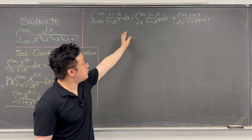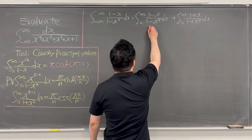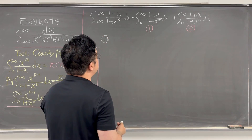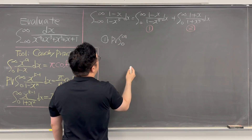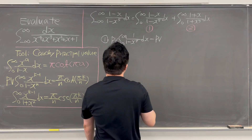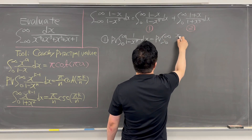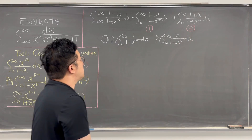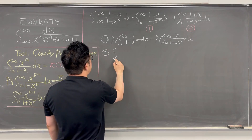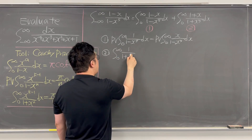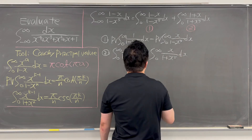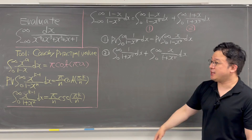Okay, so this is where we are. We split the integral into two parts — call them integral 1 and integral 2. Integral 1 equals the Cauchy principal value of the integral from 0 to infinity of 1 over 1 minus x to the power of 5 dx, minus the Cauchy principal value of the integral from 0 to infinity of x over 1 minus x to the power of 5 dx. Integral 2 equals the integral from 0 to infinity of 1 over 1 plus x to the power of 5 dx, plus the integral from 0 to infinity of x over 1 plus x to the power of 5 dx. The setup is all done to use the formulas.